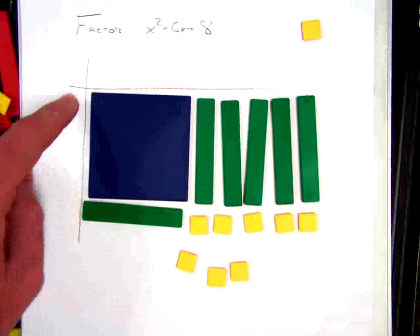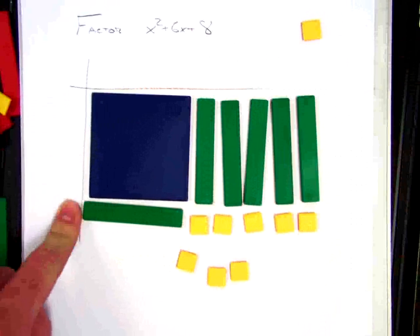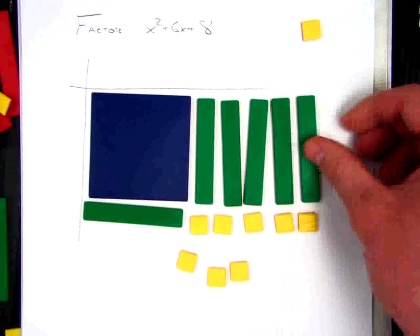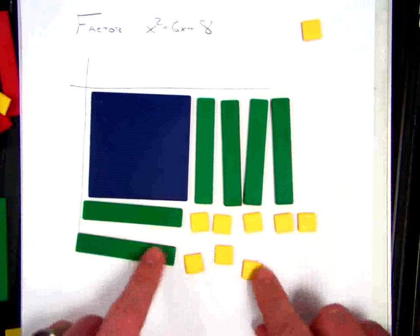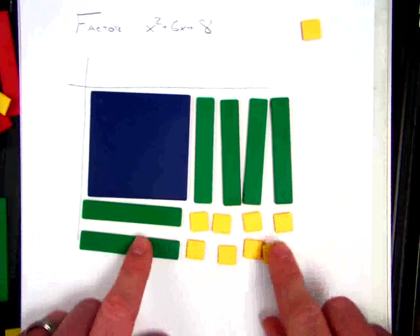So if I tried x plus 5 times x plus 1, I know that wouldn't work. So I'm just going to keep trying to arrange these tiles until it makes a perfect rectangle.